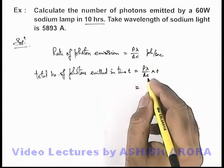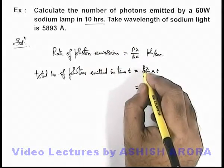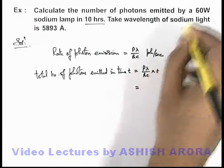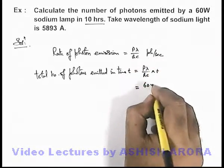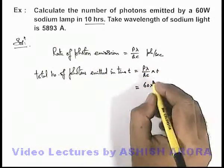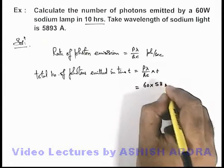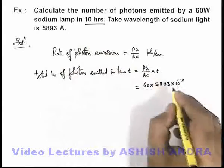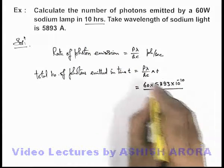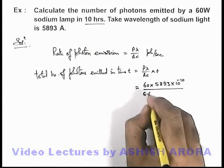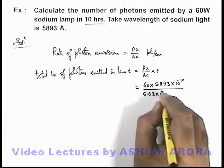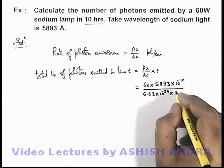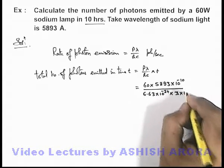We substitute the values here for 10 hours. P is 60 watts. The wavelength lambda is 5893 × 10^-10 meters (converting angstrom to meters), divided by hc which is 6.63 × 10^-34 multiplied by 3 × 10^8.